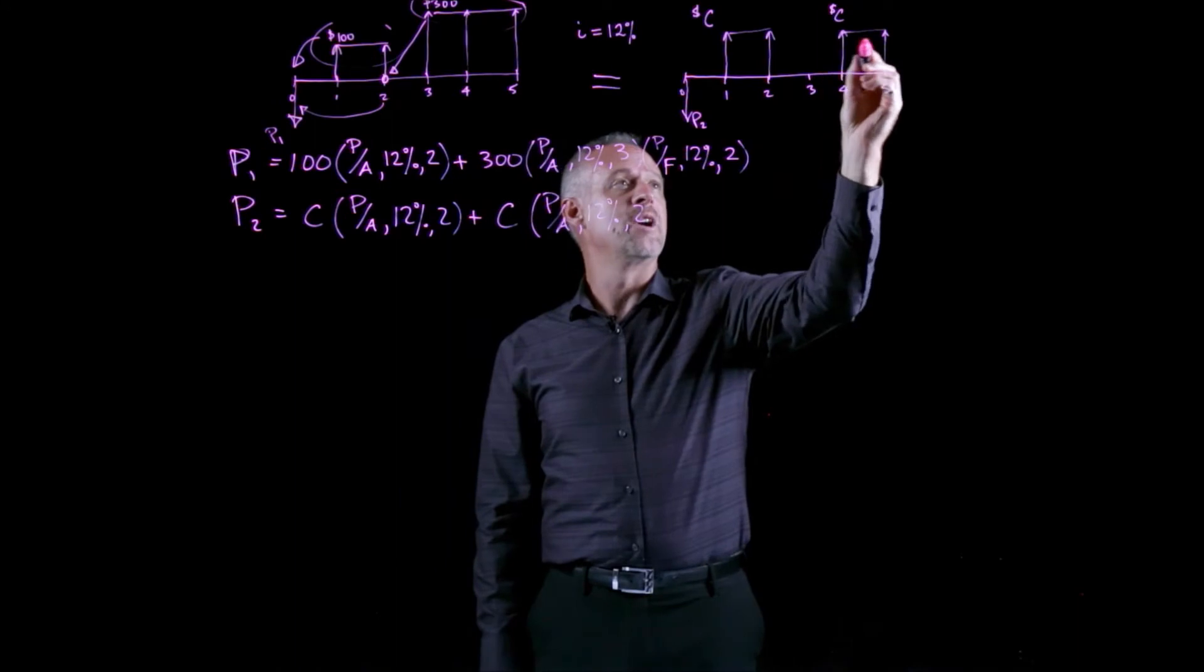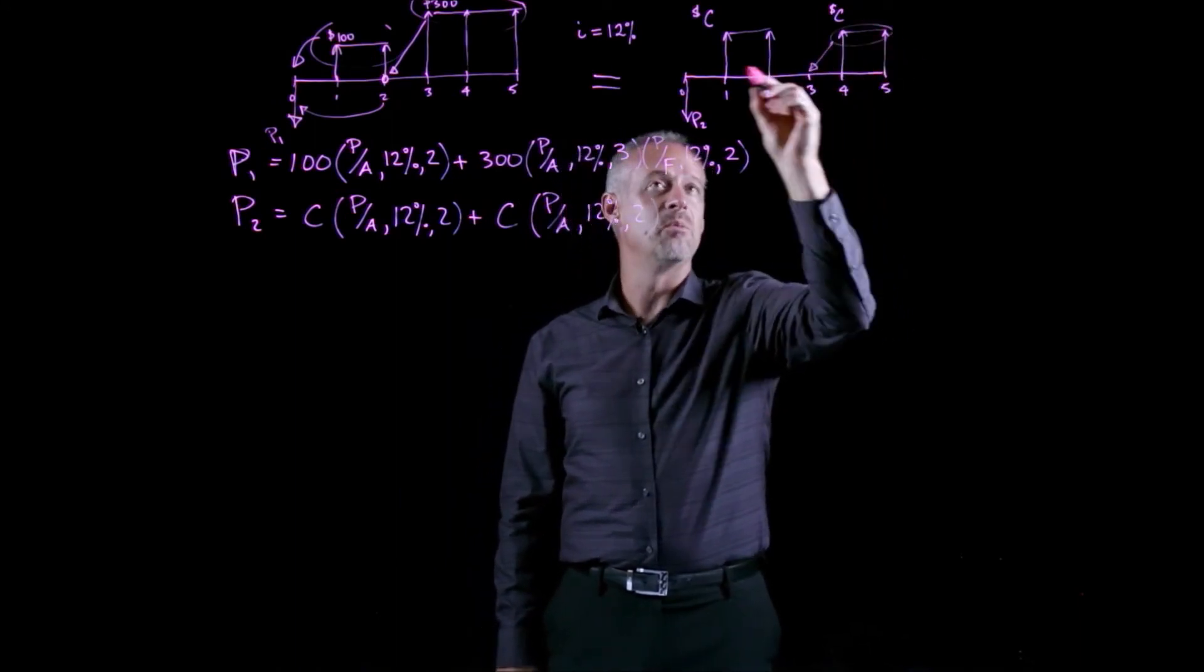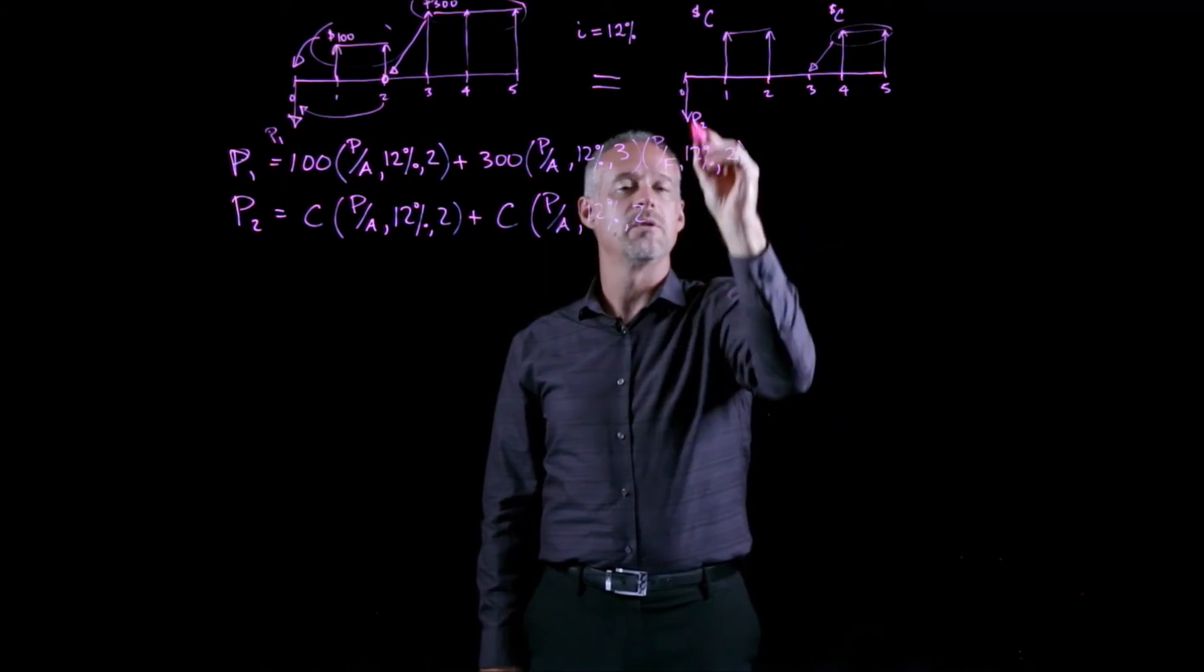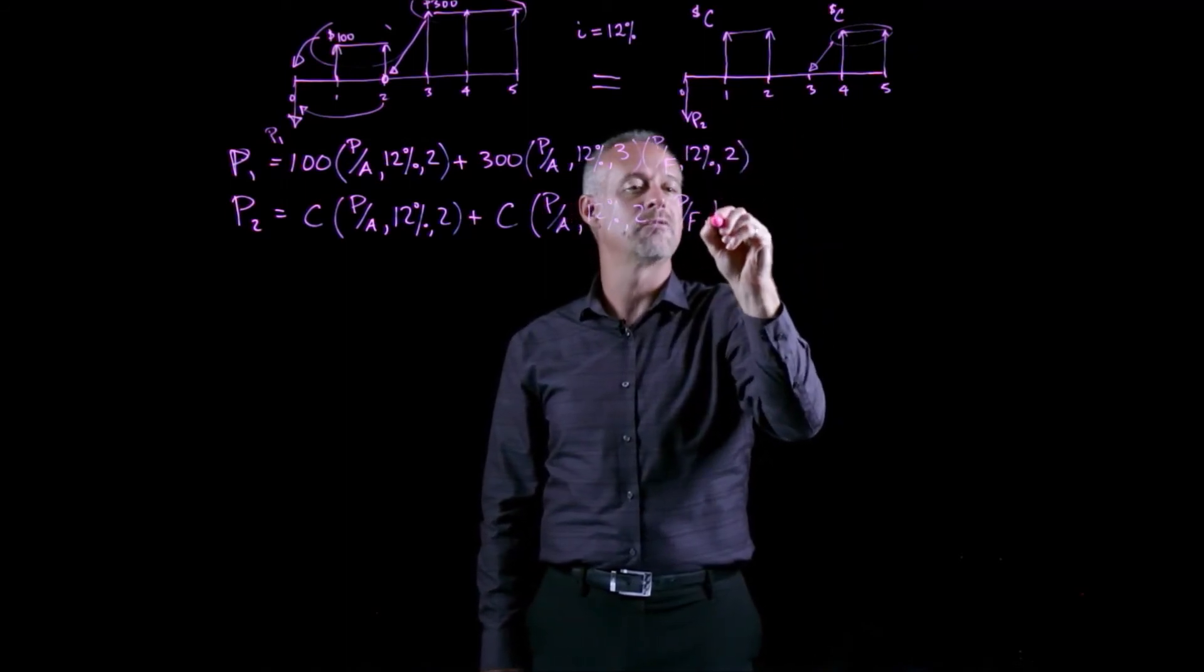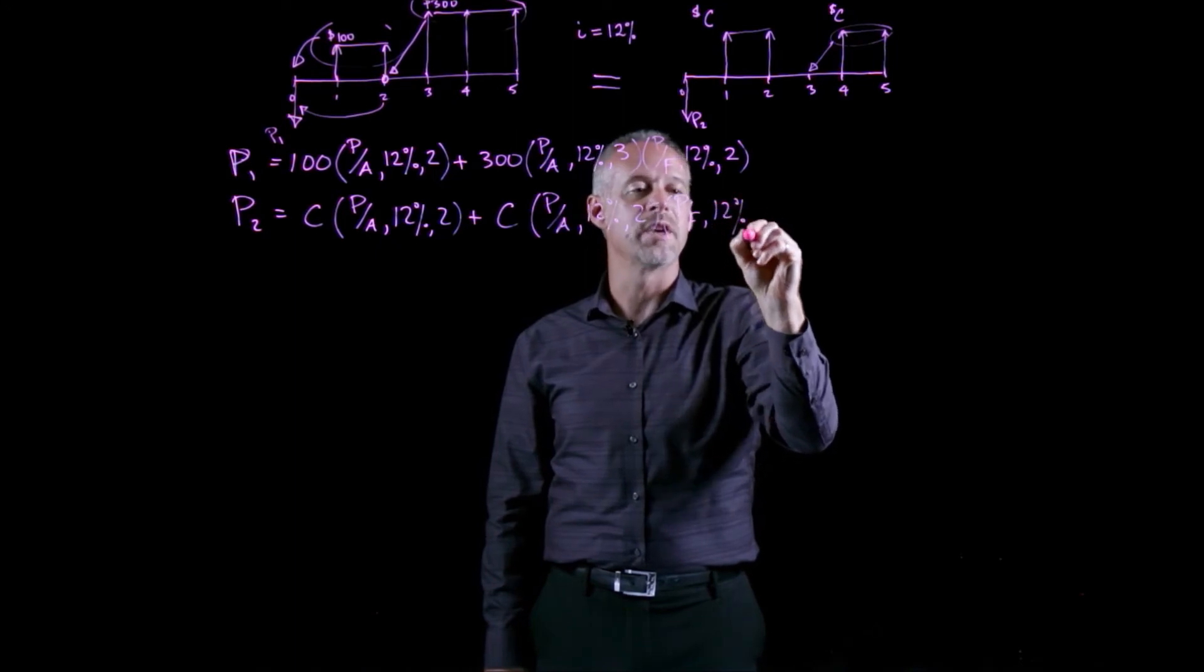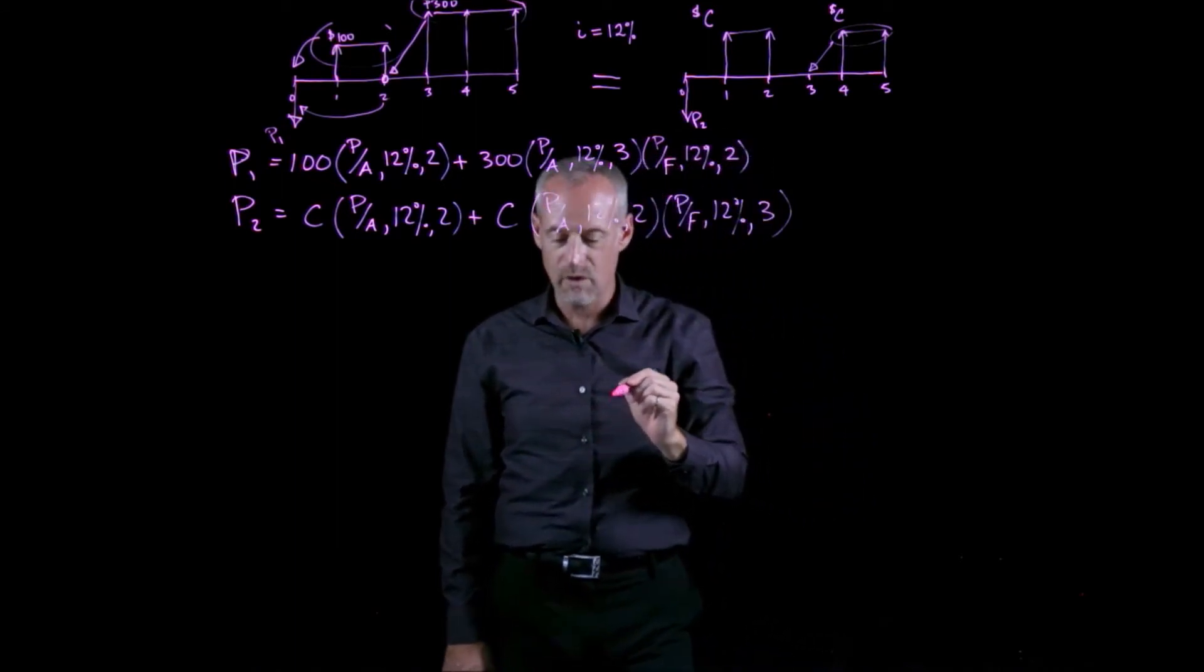plus my unknown value of C times the P given A factor for 12% and two periods. But that brings the value of these two payments to here. I need to then bring it back to time t equal to zero. So I'll use the P given F factor, at 12% for one, two, three periods.